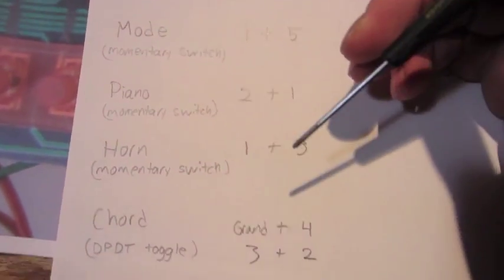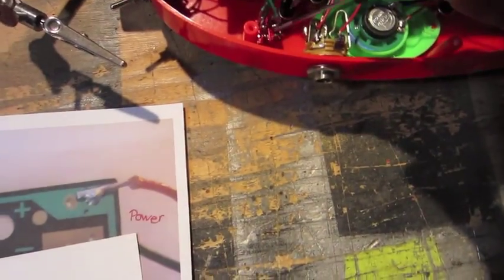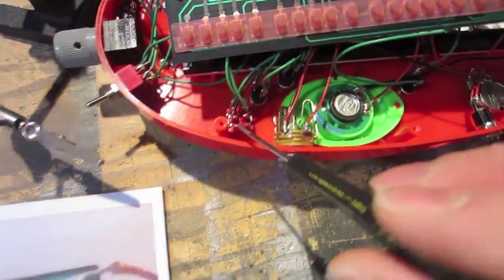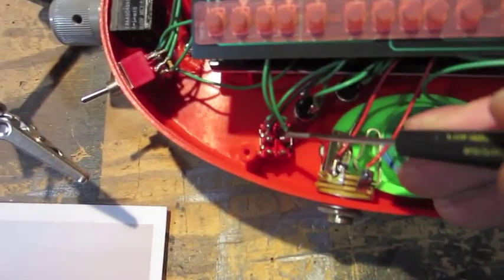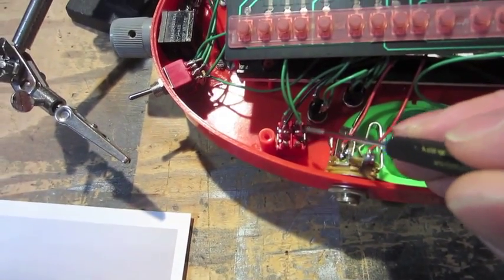The next one is the chord. This is a toggle switch, which is right here. This is a double pole, double throw toggle. So you can see I have a total of four wires connecting in there.